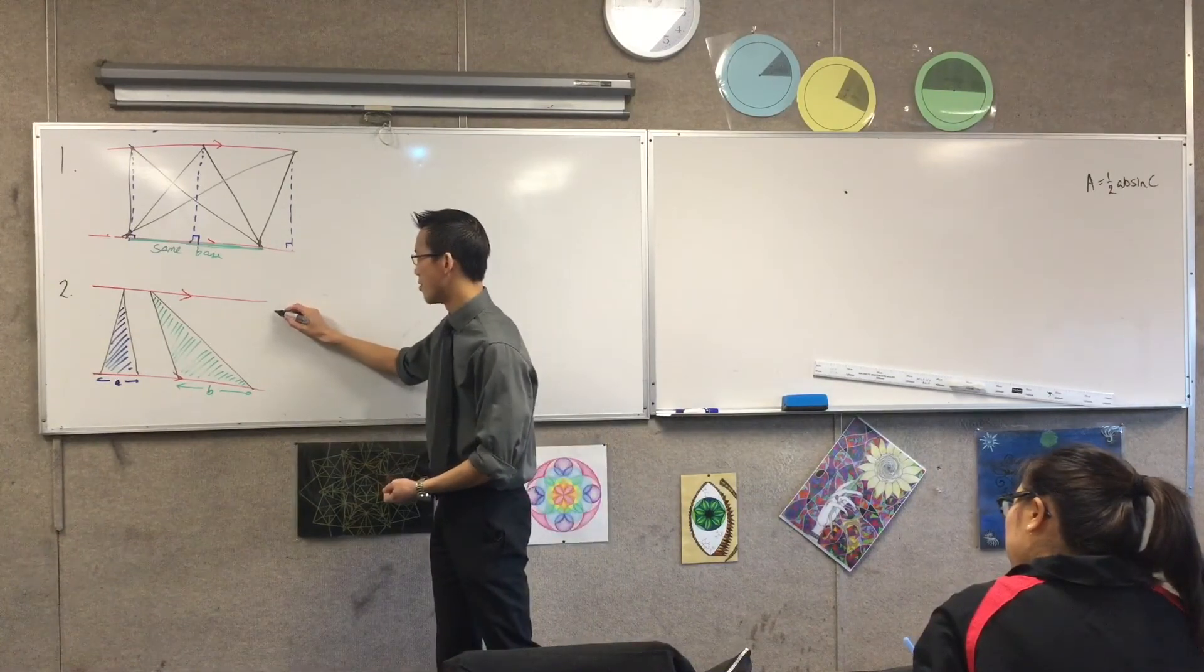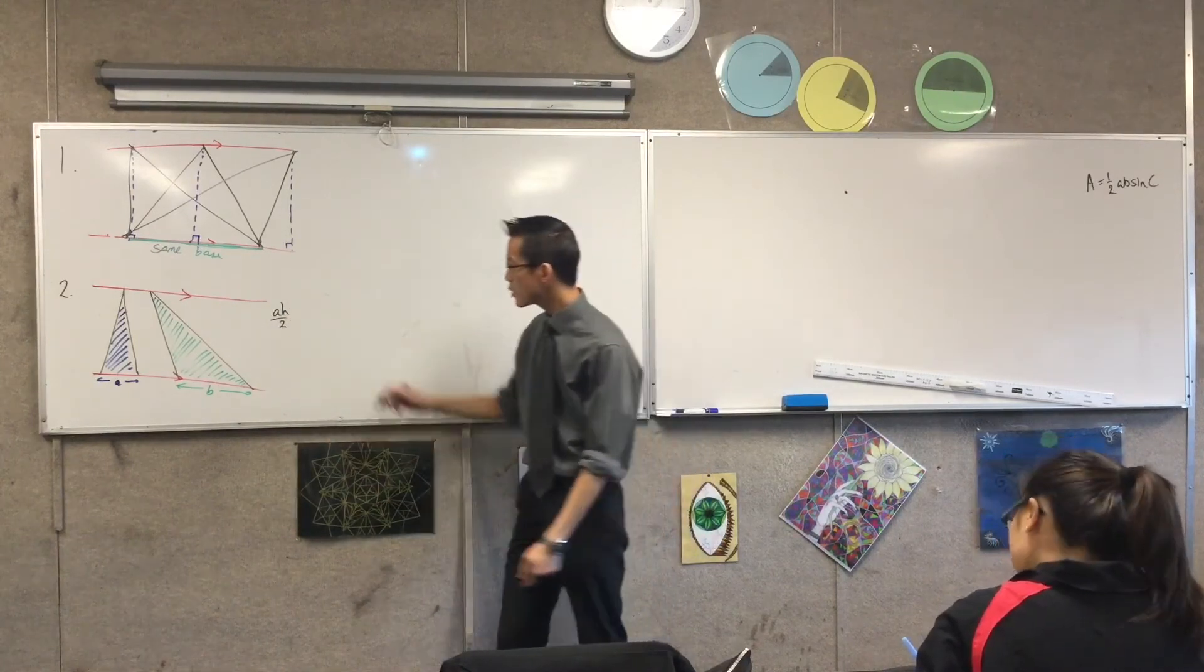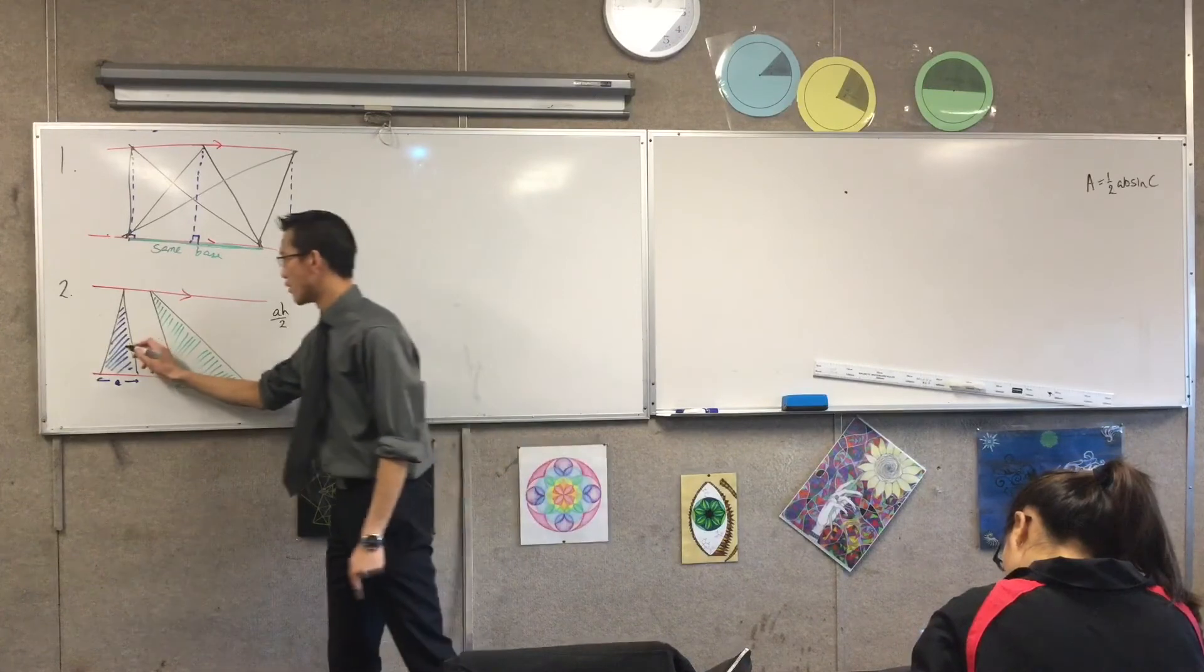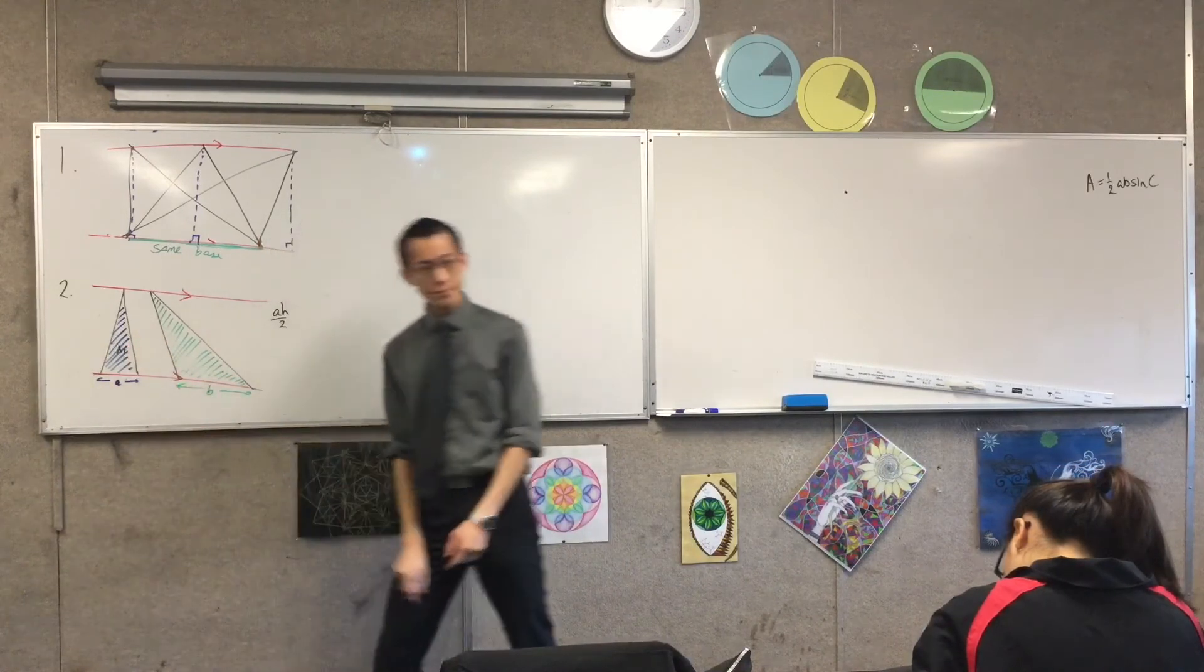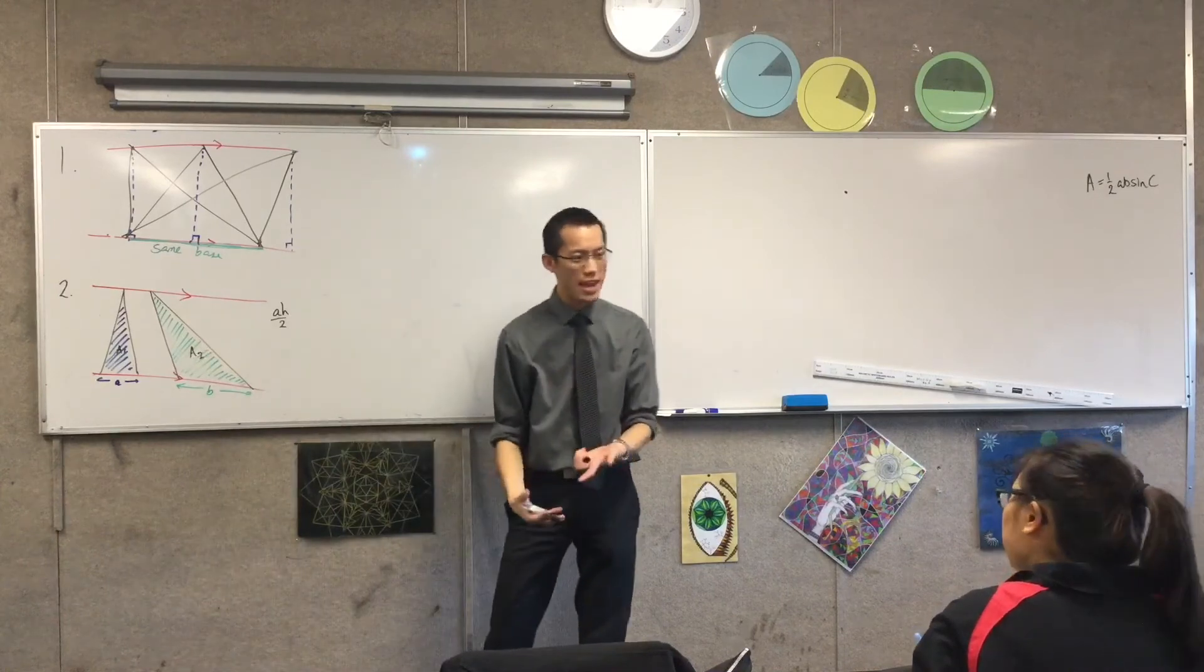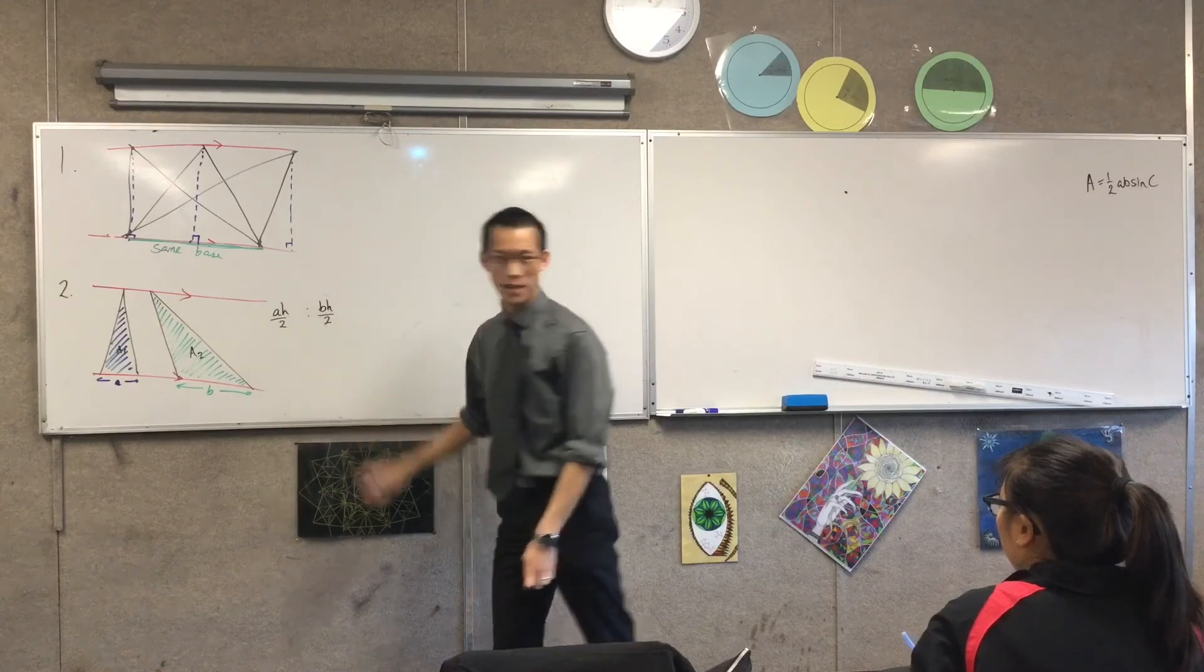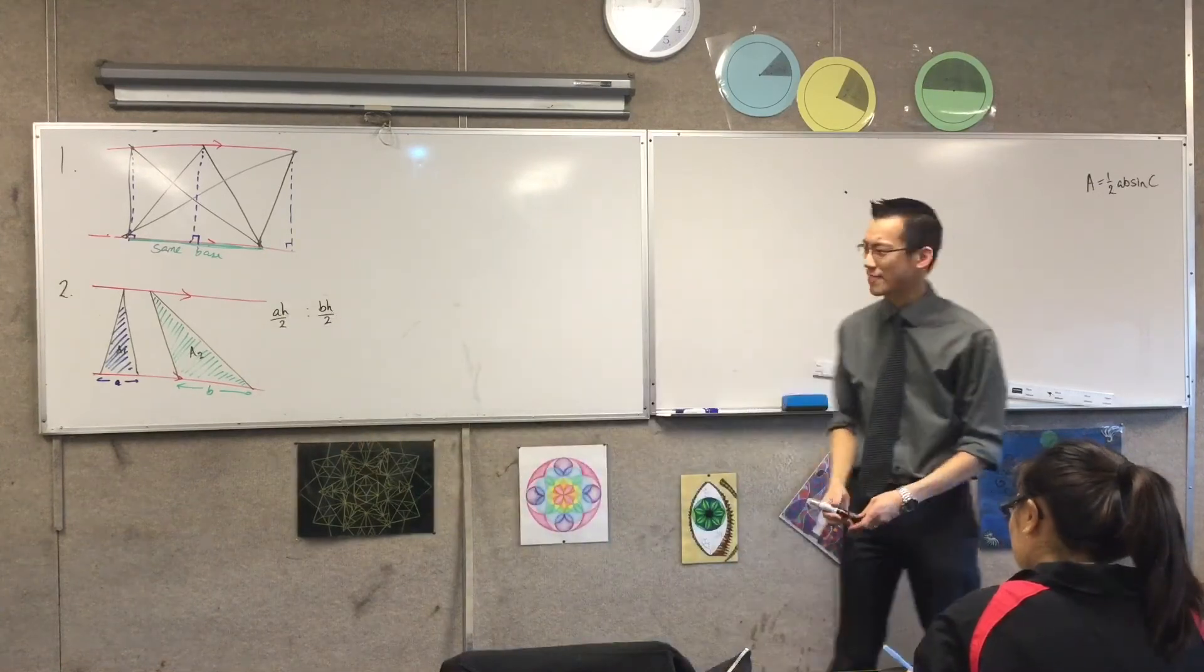It's going to be the base, which is A, times the height on 2, right? So that would be this area over here. I'll call this A1. This one over here, A2, everything will be the same except I have a different base, right? It's going to be base times height on 2, except my base this time is called B. Okay?